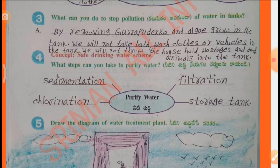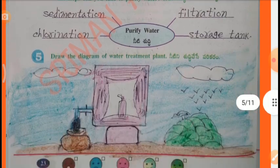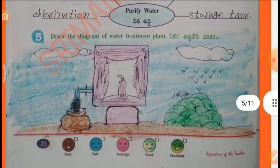What steps can you take to purify water? Steps: Filtration, Storage tank, Chlorination, Sedimentation. 5th one — Draw the diagram of a water treatment plant.